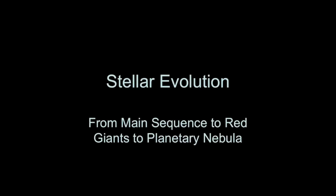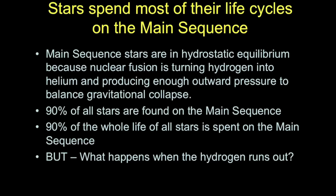In this video we're going to describe the evolution of stars from main sequence to the red giant stage. All stars become main sequence stars after their protostar stage. They become a main sequence star when two things occur: when nuclear fusion reactions are sustained in their cores, turning hydrogen into helium.